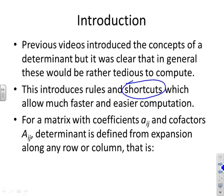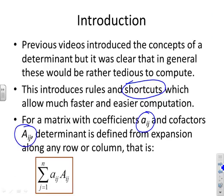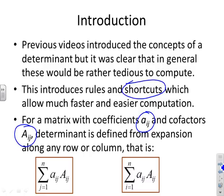A reminder of the general definition of a determinant. If a matrix has coefficients lowercase aij and cofactors uppercase Aij, then you can do the sum along any row or column of the coefficients times the corresponding cofactors.